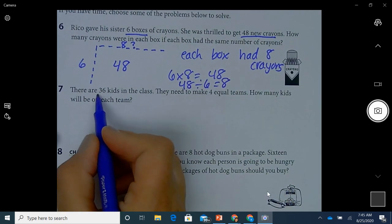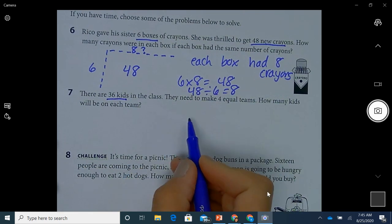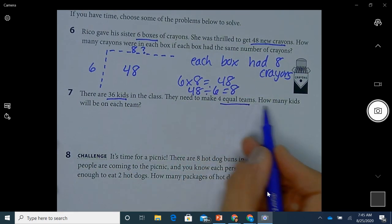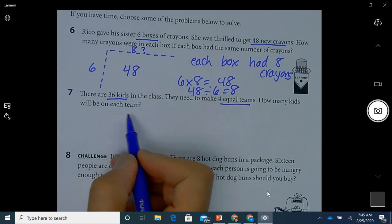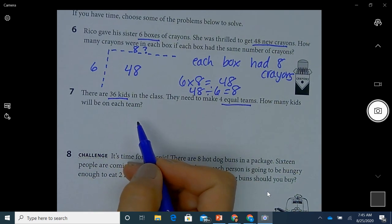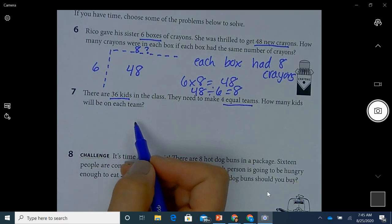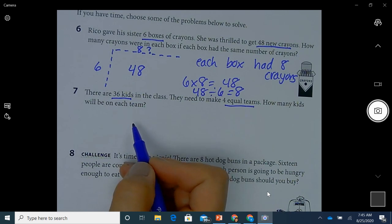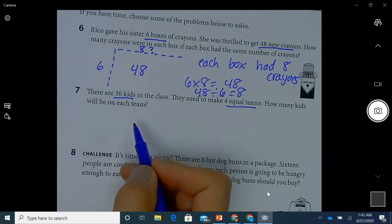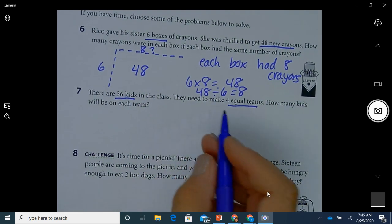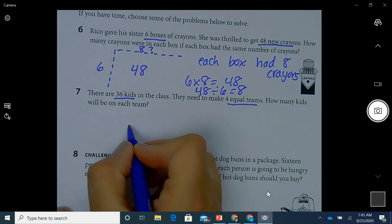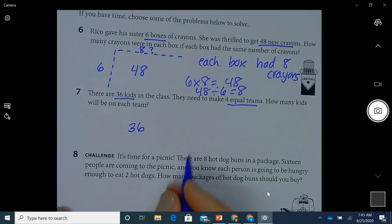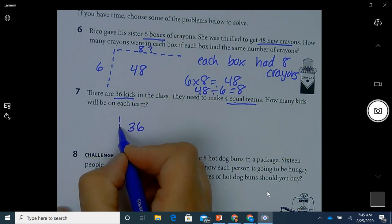Okay. Let's do number seven. There are 36 kids in the class. They need to make four equal teams. How many kids will be on each team? So I need to make four equal teams and how many kids are going to be on each team. And I know that there's 36 altogether. So 36 right here. And I know there's four. So I'm going to do one, two, three, four.